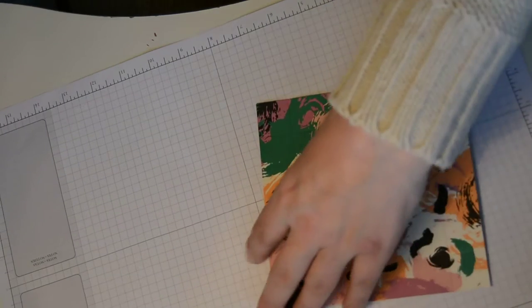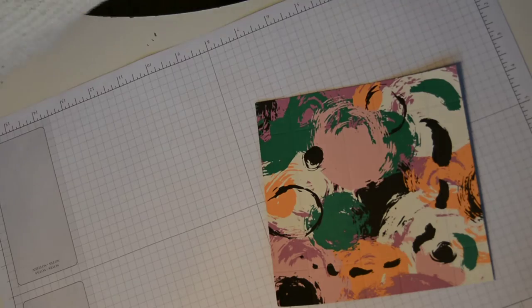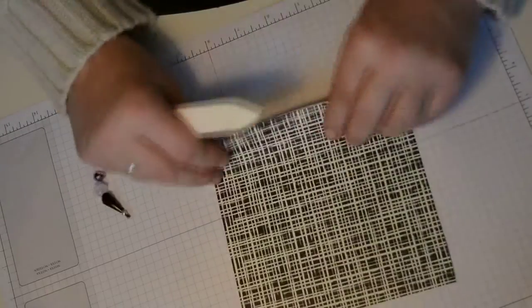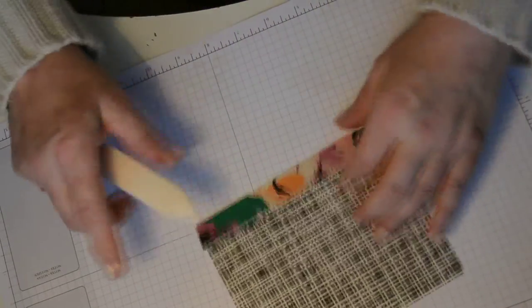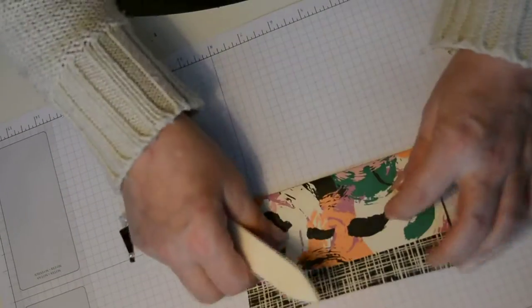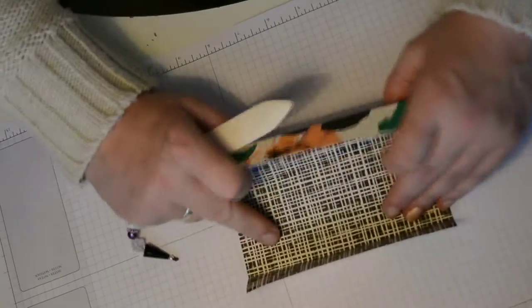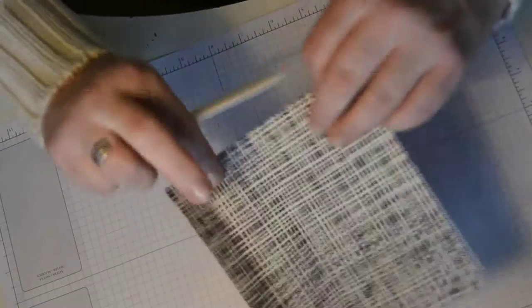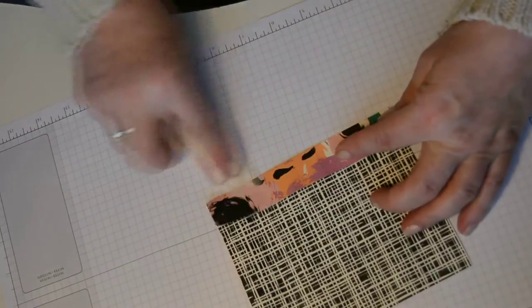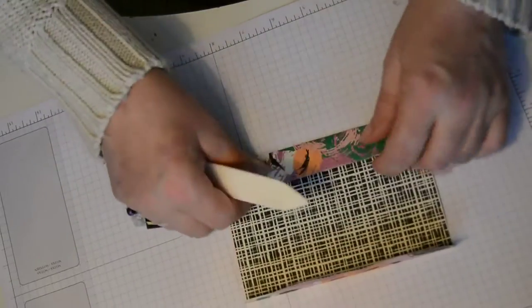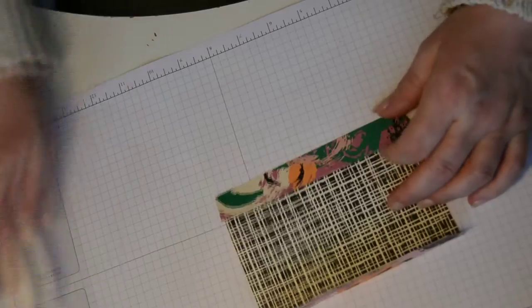We're then just going to fold and burnish the score lines. Very dressy paper isn't it. And the sides and one on the other side.